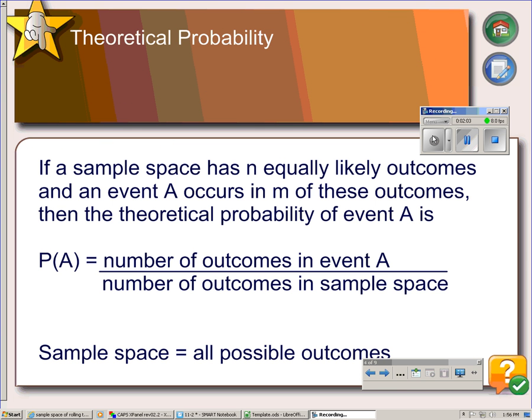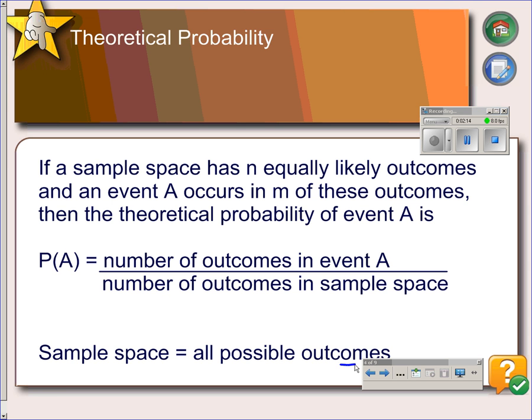Our next topic is theoretical probability. To calculate a theoretical probability, you have to first find the sample space. So the sample space is the collection of all possible outcomes, and that is the denominator to your probability.